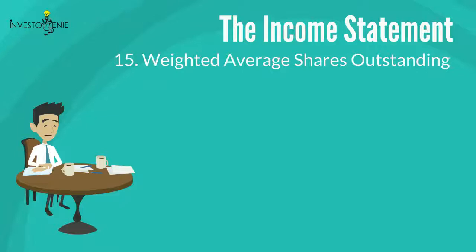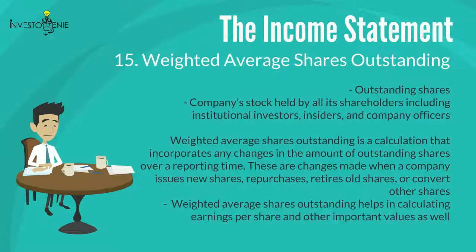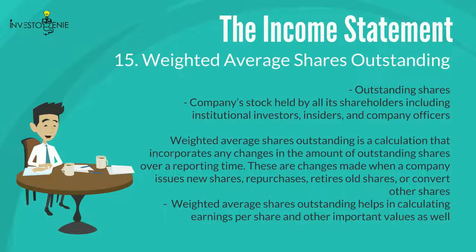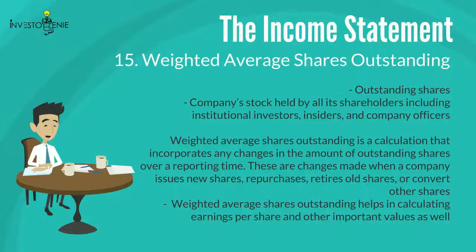Fifteen: weighted average shares outstanding. To understand this, it is important to first understand outstanding shares — the company's stock held by all its shareholders including institutional investors, insiders, and company officers. The weighted average shares outstanding is a calculation that incorporates any changes in the amount of outstanding shares over a reporting period, such as when a company issues new shares, repurchases or retires old shares, or converts other shares. It helps in calculating EPS and other important values.